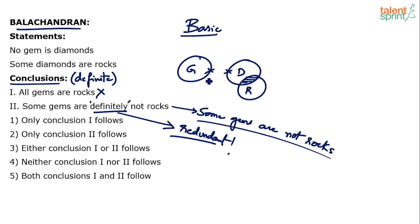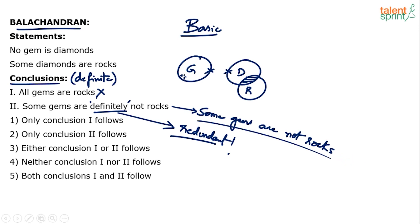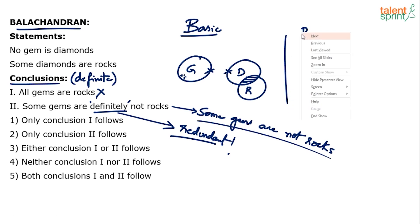Look at the diagram. Yes, you can say that some gems are not rocks — it satisfies the basic diagram. Conclusion 1 failed in the basic diagram itself, but conclusion 2 satisfies the basic diagram. So can you take it as correct? No. Just because it has satisfied the basic diagram does not mean it is correct. You have to check all the possible diagrams.